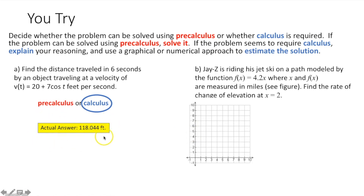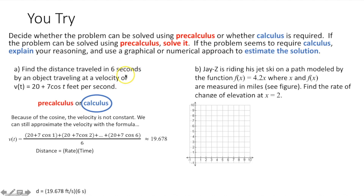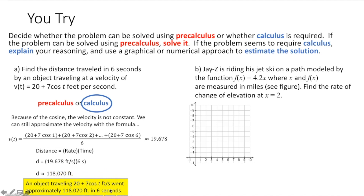A way we could estimate this is to get the average velocity over those 6 seconds by plugging in 1, 2, 3, 4, 5, and 6 for t, then adding those up and dividing by 6. That gives an average velocity of approximately 19.678. Plugging that into distance equals rate times time with a time of 6 seconds gives approximately 118.070 feet, which is remarkably close to the actual answer of 118.044 feet.